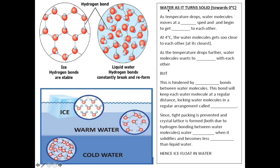But how about water? Water turns solid — or becomes ice — at 0 degrees Celsius. As the temperature drops, water molecules move slower and begin to get closer to each other. At 4 degrees Celsius, the water molecules get as close to each other as they can. As the temperature drops further from 4°C toward 0°C, water molecules lose more and more energy and want to become closely packed together. However, this is hindered by hydrogen bonds between water molecules. These bonds keep each water molecule at a regular distance, locking them in a regular arrangement called a crystal lattice.